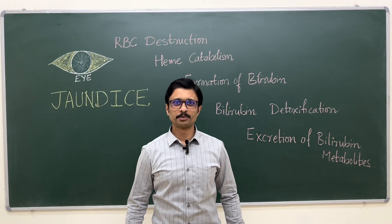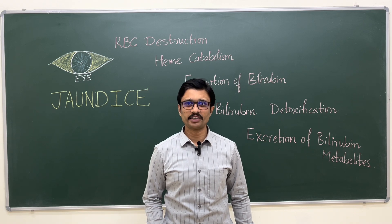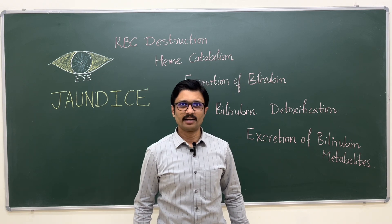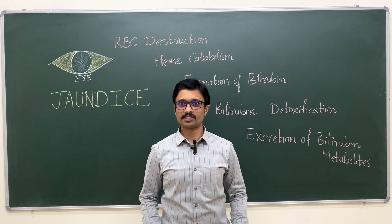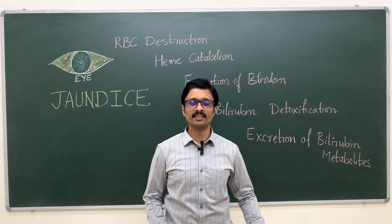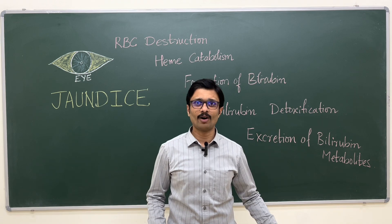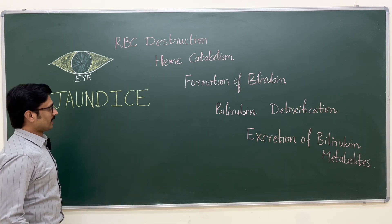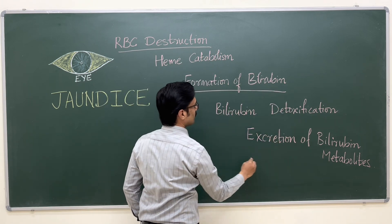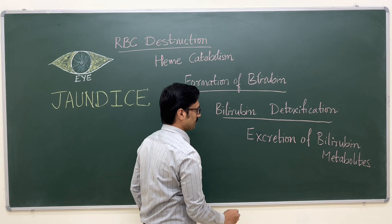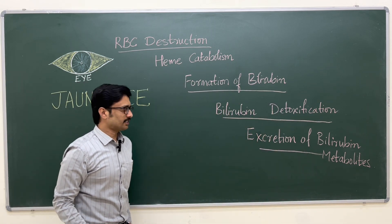In this lecture, I'll be explaining how red blood cells are destroyed after their lifespan of 120 days is over, how bilirubin is formed from hemoglobin, how this toxic bilirubin is detoxified, and how it is excreted from the body. We'll discuss under these headings: RBC destruction, formation of bilirubin, bilirubin conjugation or detoxification, and finally excretion of bilirubin metabolites.